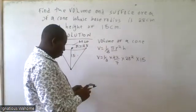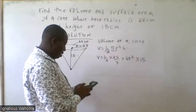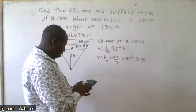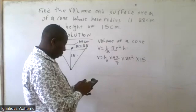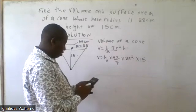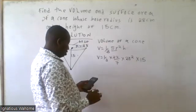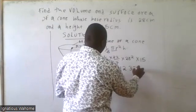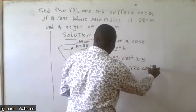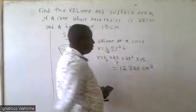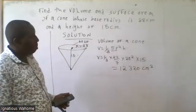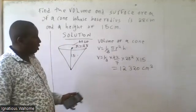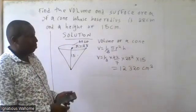So: one-third times 22 over 7 times 28 squared times 15. This gives us a volume of 12,320 cubic centimetres. That's the volume — just as simple as that.